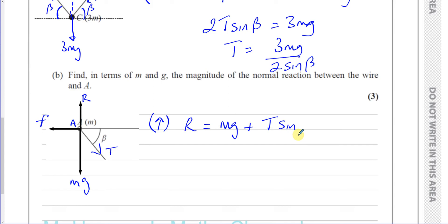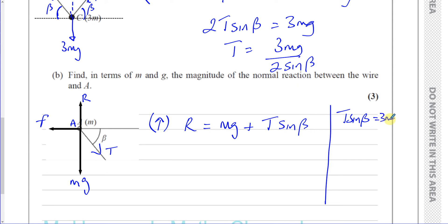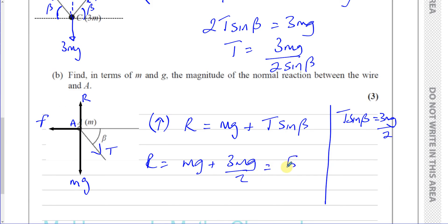The answer must be in terms of M and G only, so we substitute. From part A, T sine beta equals 3MG over 2. Therefore R equals MG plus 3MG over 2, which is 2MG over 2 plus 3MG over 2, giving R equals 5MG over 2.